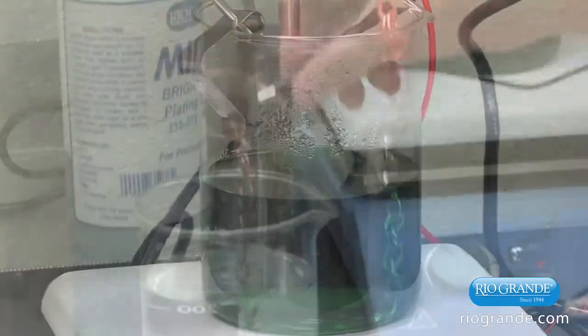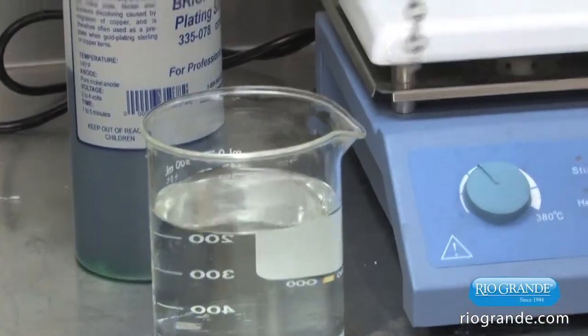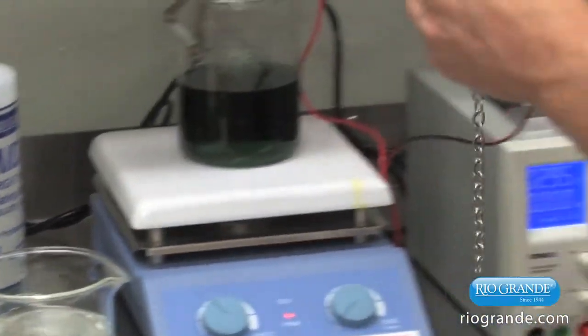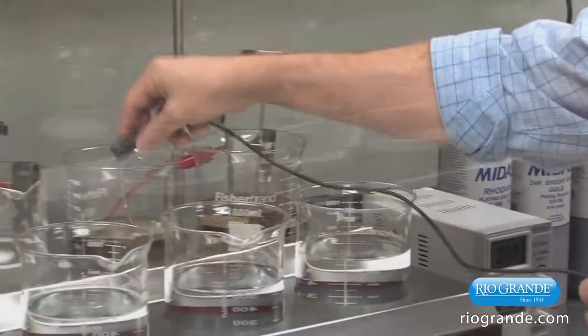After a flash preplating bath, rinse the piece in distilled water and repeat the activation process using electro cleaner followed by distilled water and another acid dip.